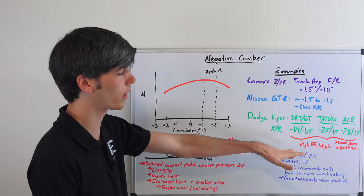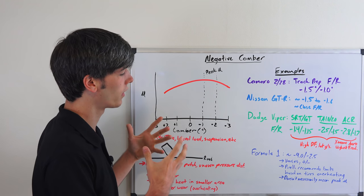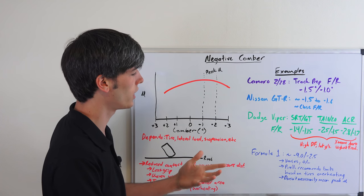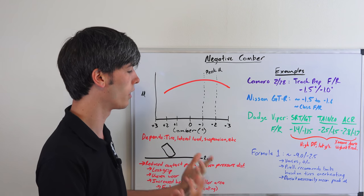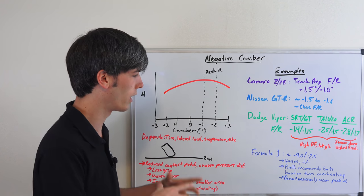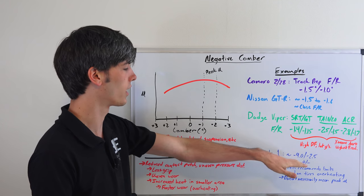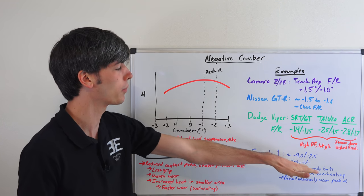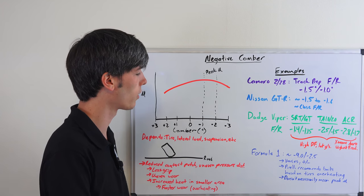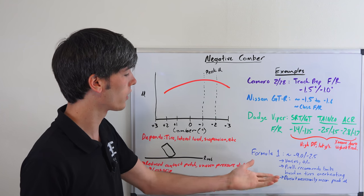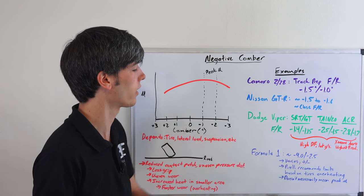Basically the reason Pirelli is recommending something like this is because it won't produce too much heat in the tire, so the tire won't overheat and fail. Pirelli is looking out, of course, as far as safety as well as performance when they're taking these into consideration. You could perhaps get more performance with a little bit more negative camber out of it, and this doesn't, as I was saying, necessarily mean the peak.